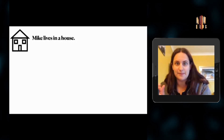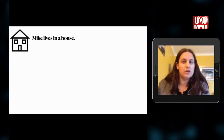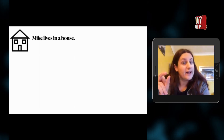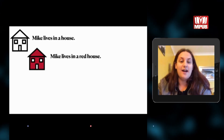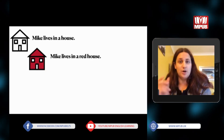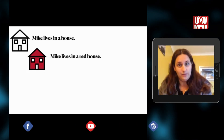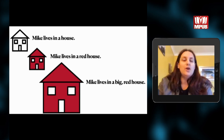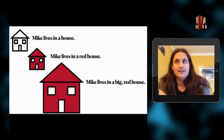Let's take a look at this very simple sentence: 'Mike lives in a house.' Do we know a lot about this sentence? No — we know there's Mike and he lives in a house, but there are no adjectives. What happens if we add one? 'Mike lives in a red house.' Already we know a lot more. Red is the adjective, giving us more information about the noun 'house.' 'Mike lives in a big red house' — now we know even more.